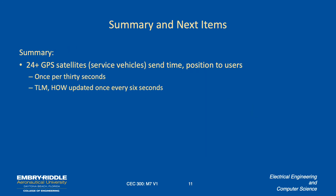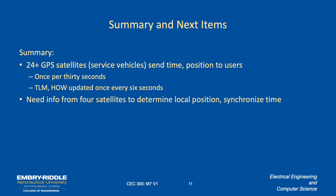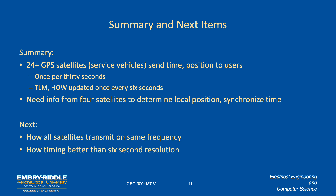In summary: there are at least 24 operational GPS satellites at any time (currently 30), and they send time and position information to users. Position information is updated once every 30 seconds; the telemetry data and handover word are updated once every 6 seconds. You need information from four satellites to determine local position and synchronize time. In the next meeting, we'll look at how all satellites transmit on the same frequency and how we can achieve better timing precision than the 6-second or 1.5-second resolution from the message.